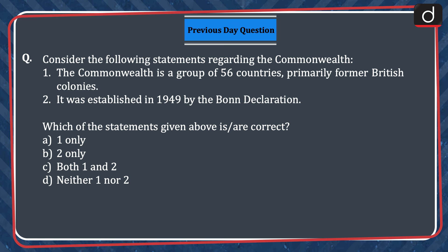The question was: consider the following statements regarding the Commonwealth. 1. The Commonwealth is a group of 56 countries, primarily former British colonies. 2. It was established in 1949 by the Bond Declaration. Which of the statements given above is or are correct? 1 only, 2 only, both 1 and 2, or neither 1 nor 2? The correct answer is option A, 1 only.